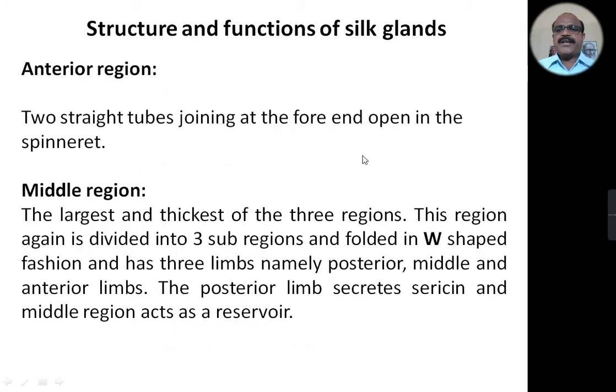The anterior region has two straight tubes joining at the fore end, and they open into the spinneret.